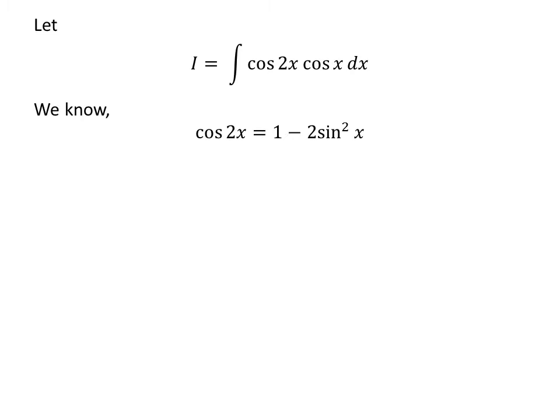The video appearing in the upper right corner explains the proof of this trigonometry identity, and the link has also been given in the description section. I have replaced cosine of 2x in the integral by its value from the identity, so I is equal to the integral of (1 minus 2 times sine squared of x) times cosine of x.